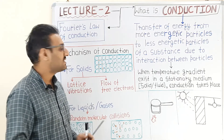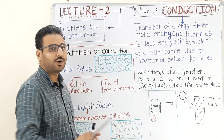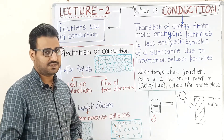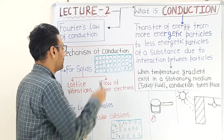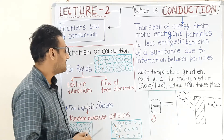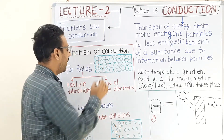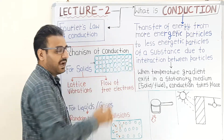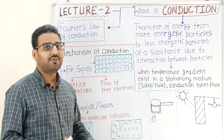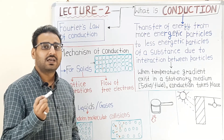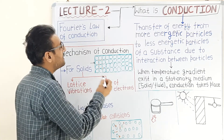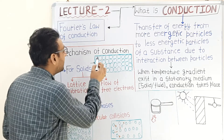Consider a rod. When heat is transferred to one end, the temperature of that end increases while the temperature of the other end remains lower. This means there is a temperature gradient within the rod. Whenever there is a temperature gradient in a substance, heat transfer takes place. Temperature is related to the internal energy or energy of the particles.